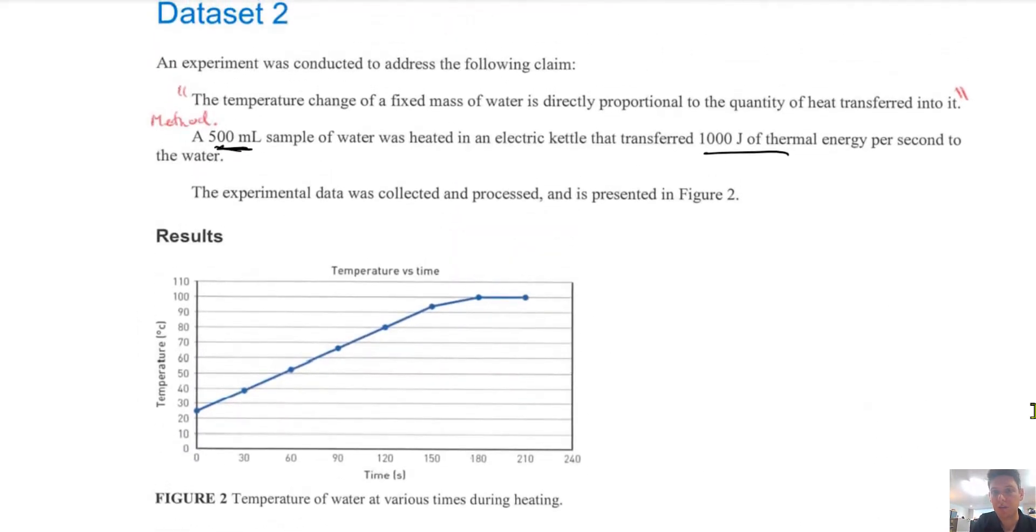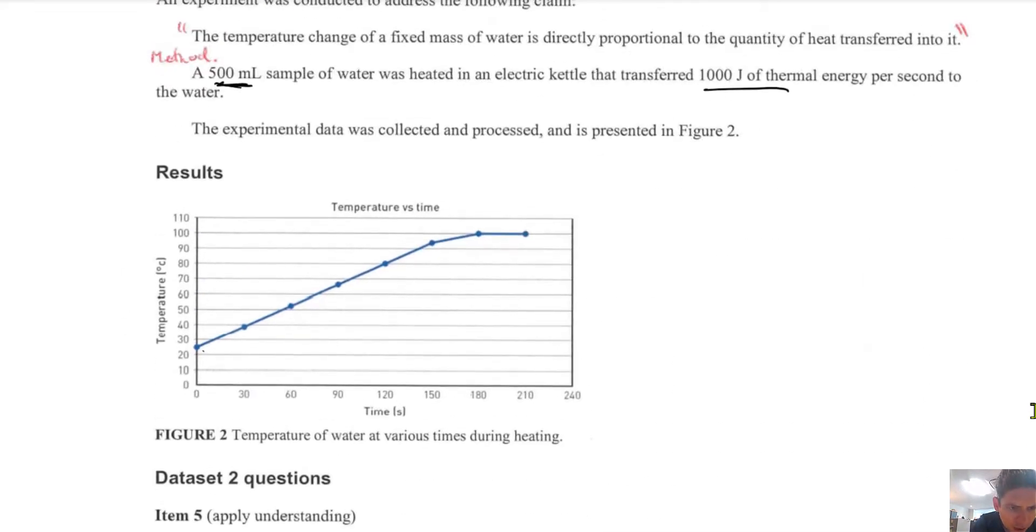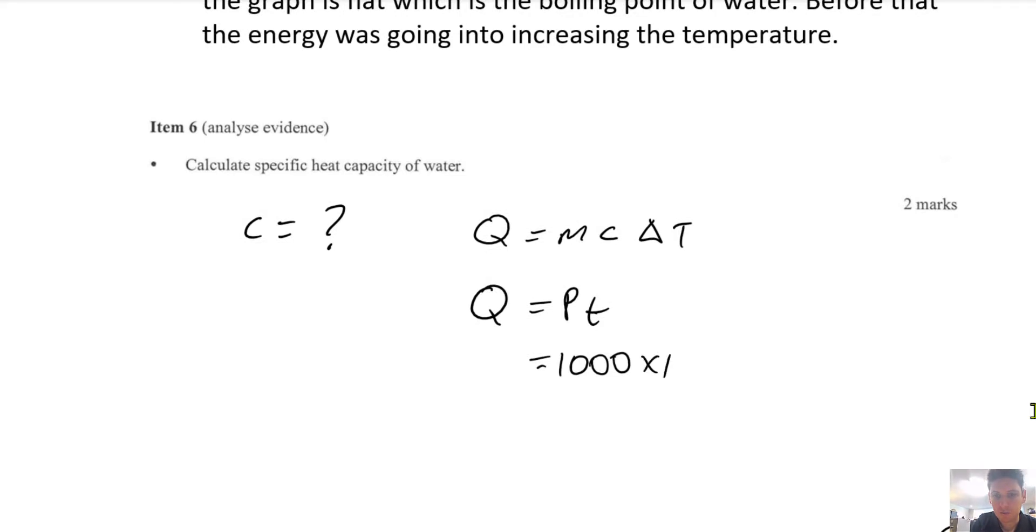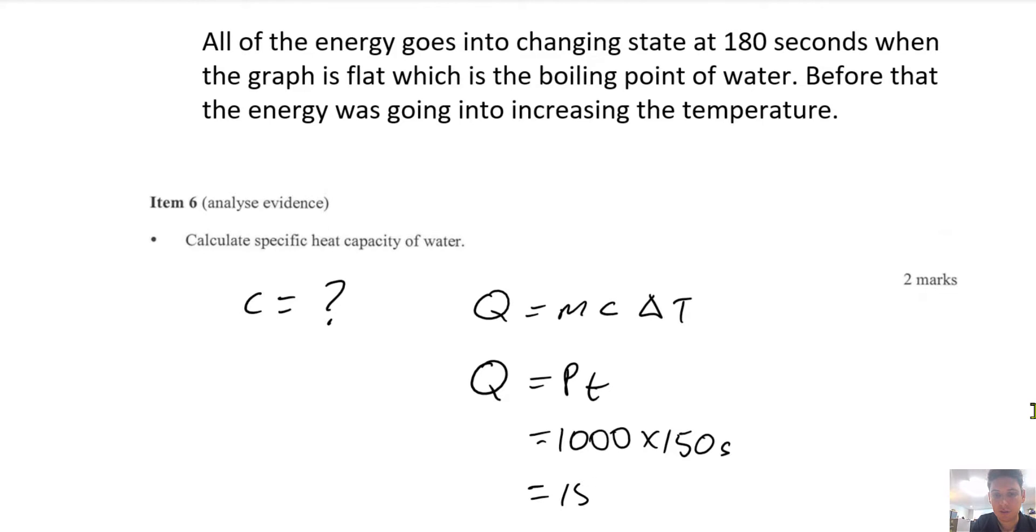So we've got a thousand joules of energy per second. And the change of temperature is from zero to 150. So the time is 150 seconds. So that's the total energy going into the water to change the temperature.